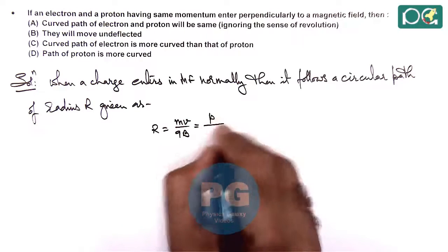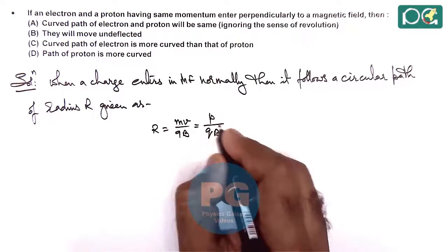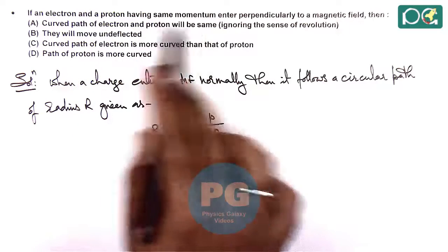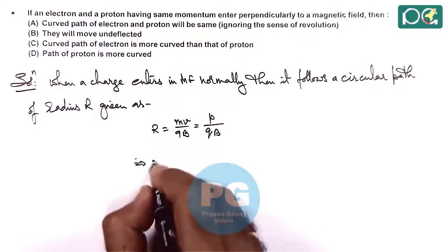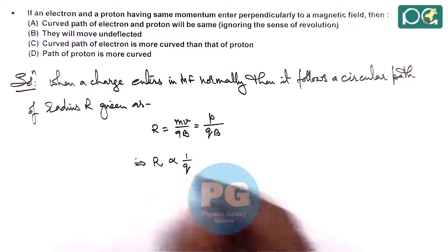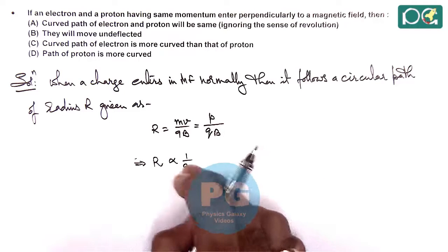So we can write it p over qb. For an electron and a proton which are having the same momentum here, we can write that the radius of the circular path is inversely proportional to the charge.